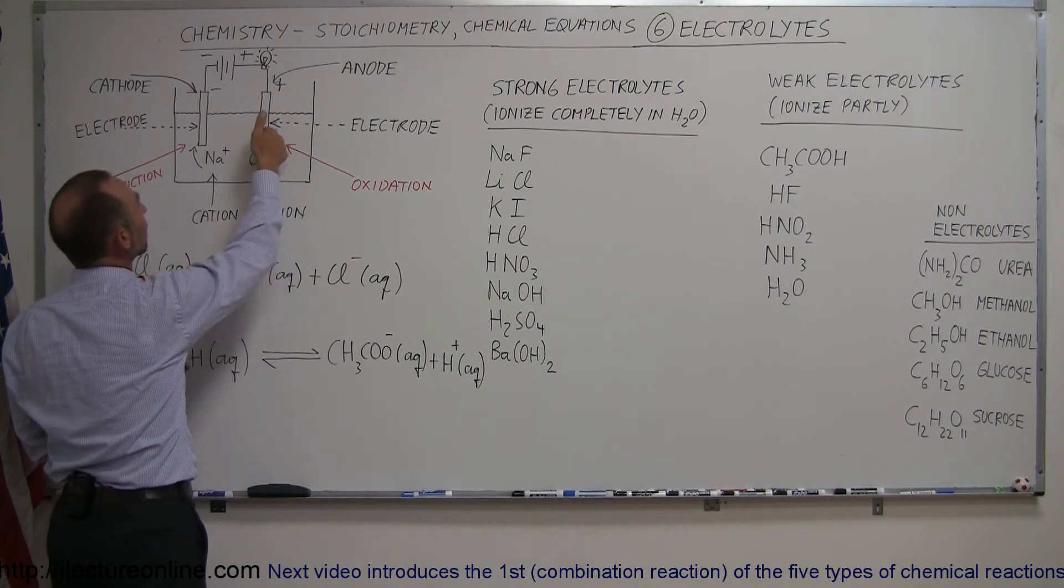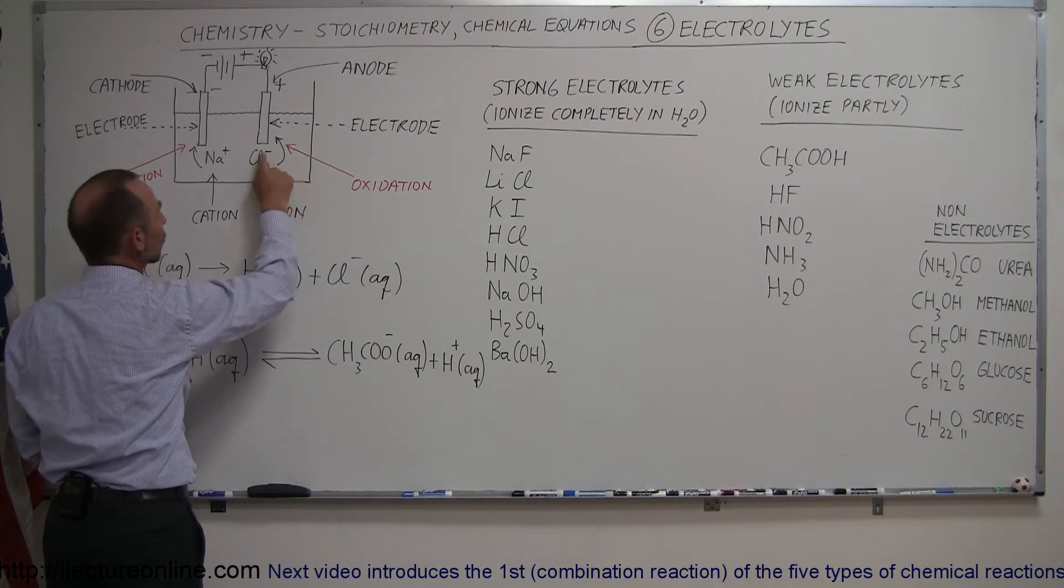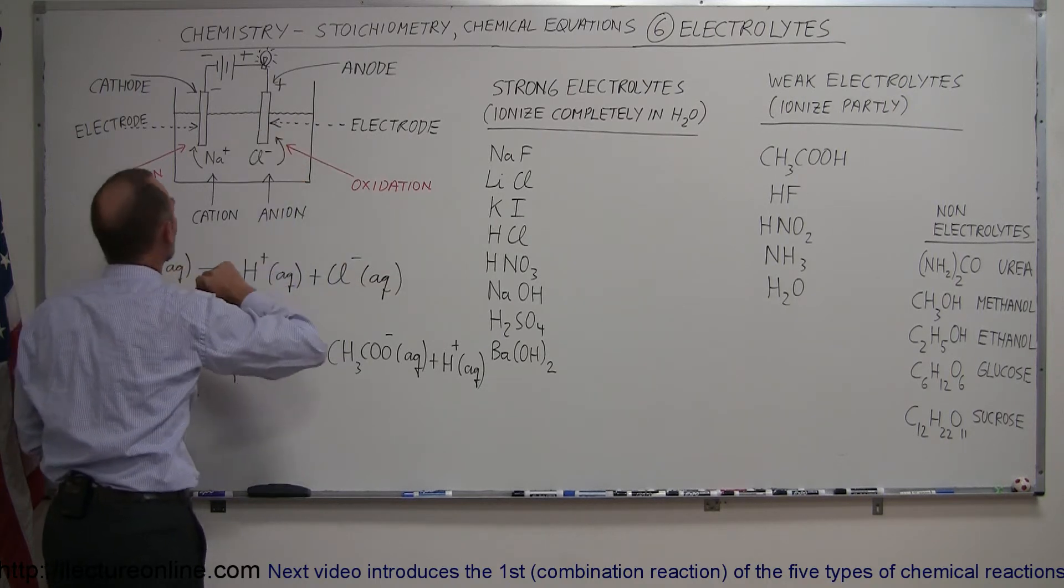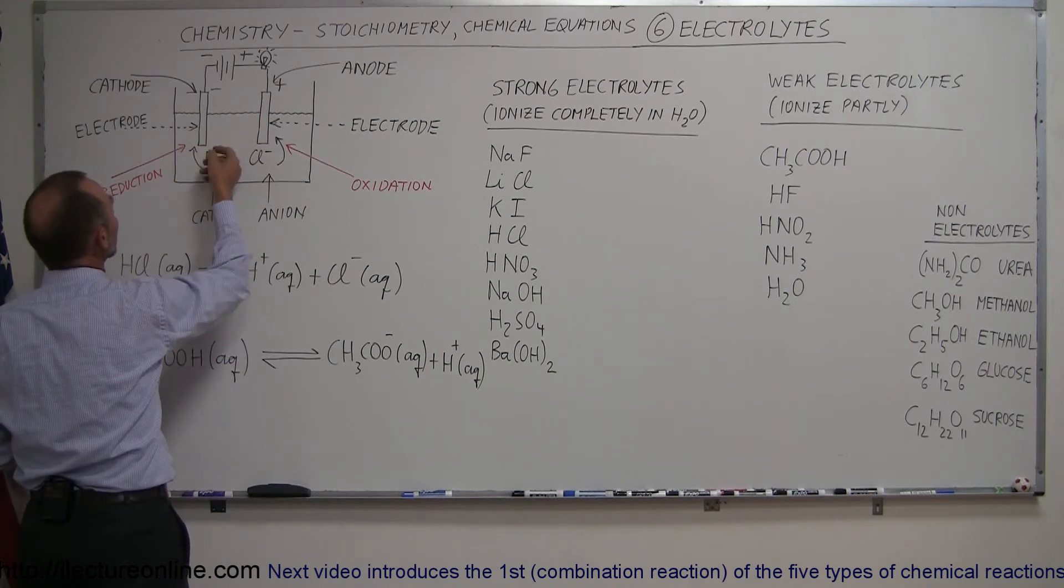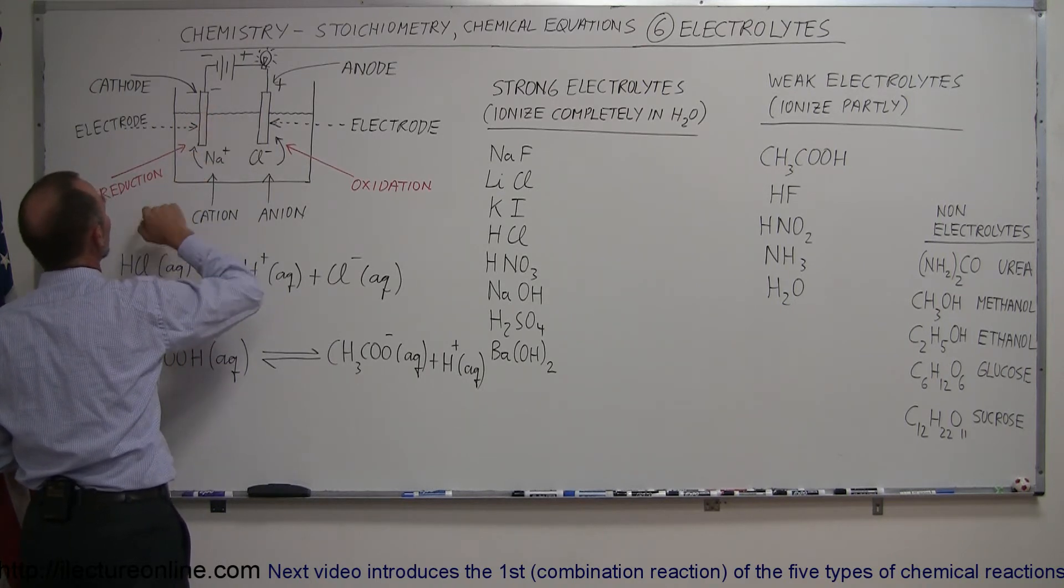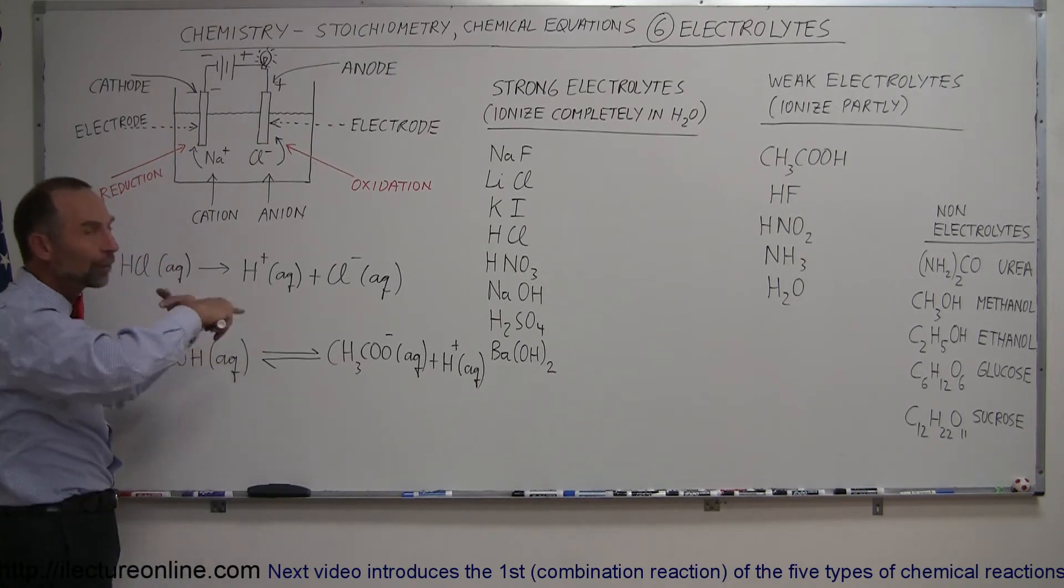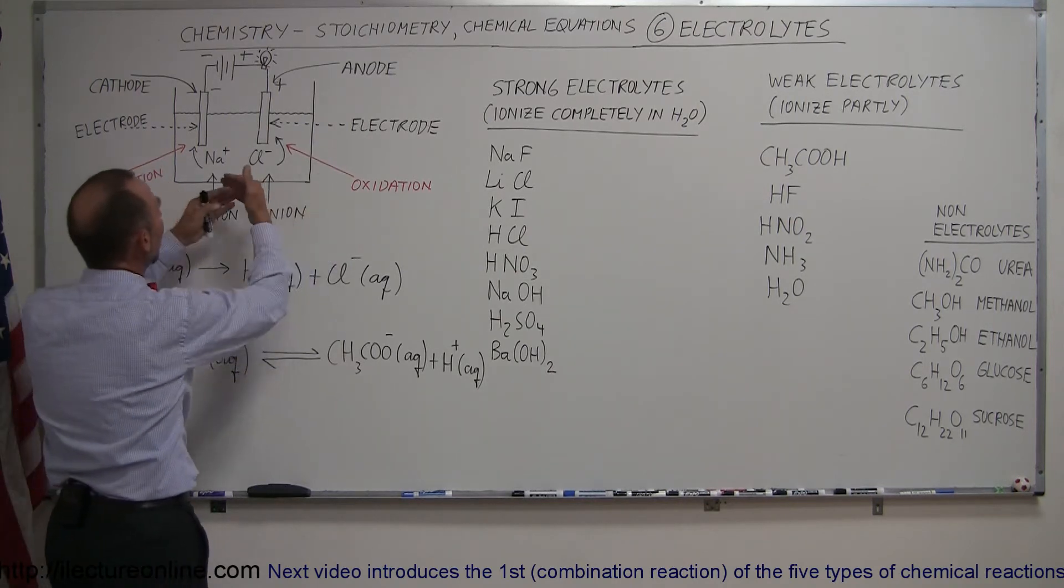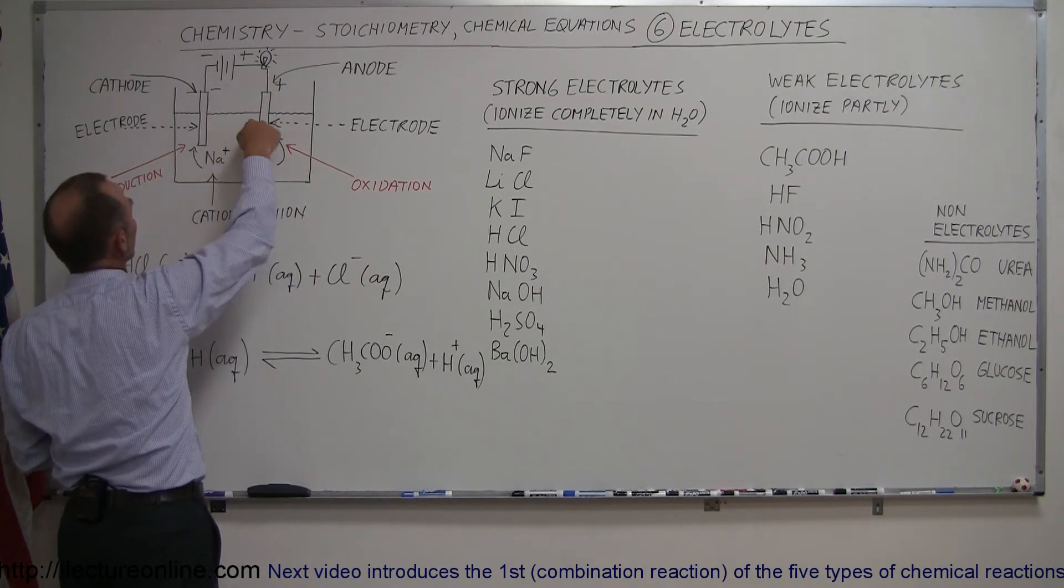The chlorine atom will deposit an electron here, so there will be an oxidation reaction when the electron jumps off the chlorine and goes onto the electrode. On this side, the sodium atom will receive an electron from this particular electrode, and therefore we have a reduction reaction there. That's how current gets carried through the fluid by depositing and absorbing these electrons, allowing current to flow.